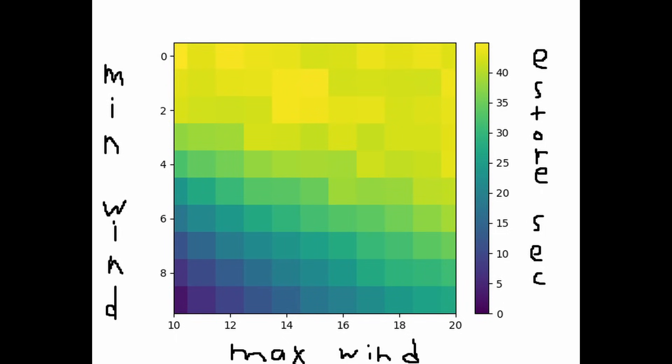I created this heat map here to represent the required e-storage time to prevent 90% of e-stalls. On the y-axis is min-wind, and on the x-axis is max-wind. The heat colors represent the amount of e-storage time required. As expected, as wind variance between min and max increases, more storage is required, with the largest range capping out at around a high 40 seconds.